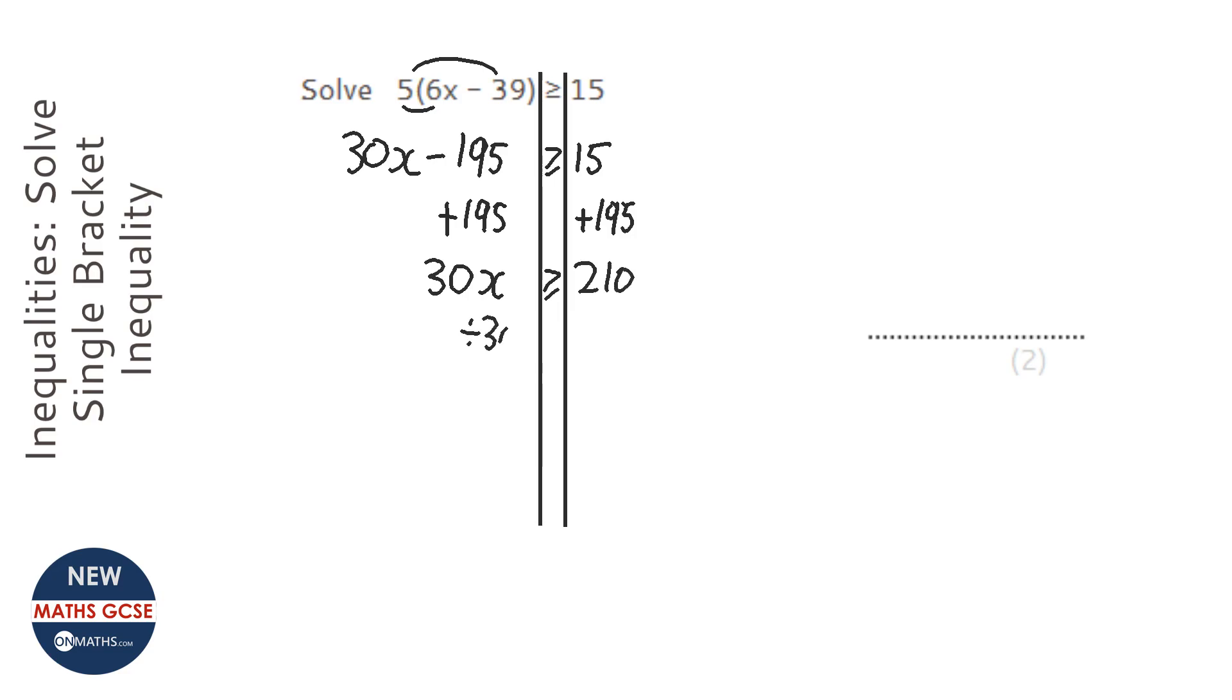And then we're going to divide 30 both sides. So x is greater than or equal to, well 21 divided by 3 is 7 so 210 divided by 30 will also be 7. So x is greater than or equal to 7.